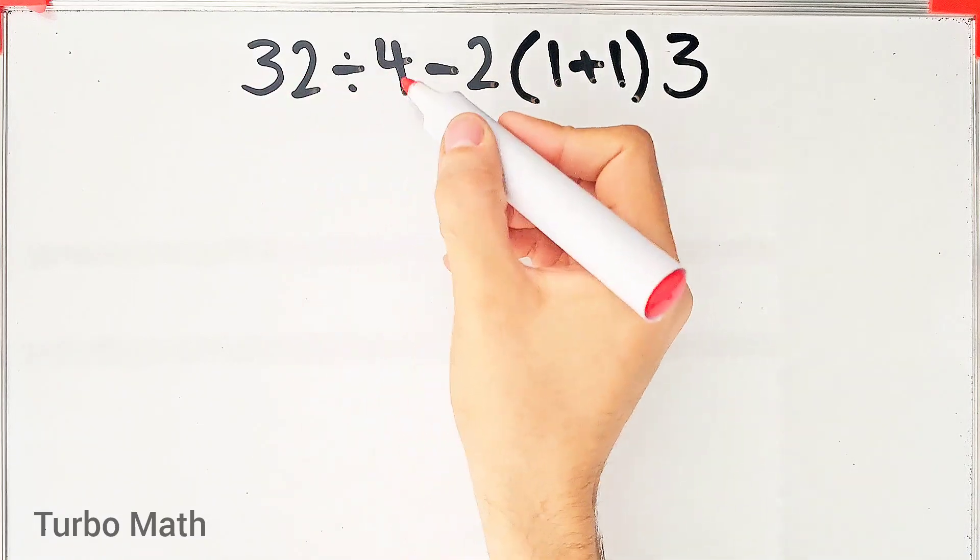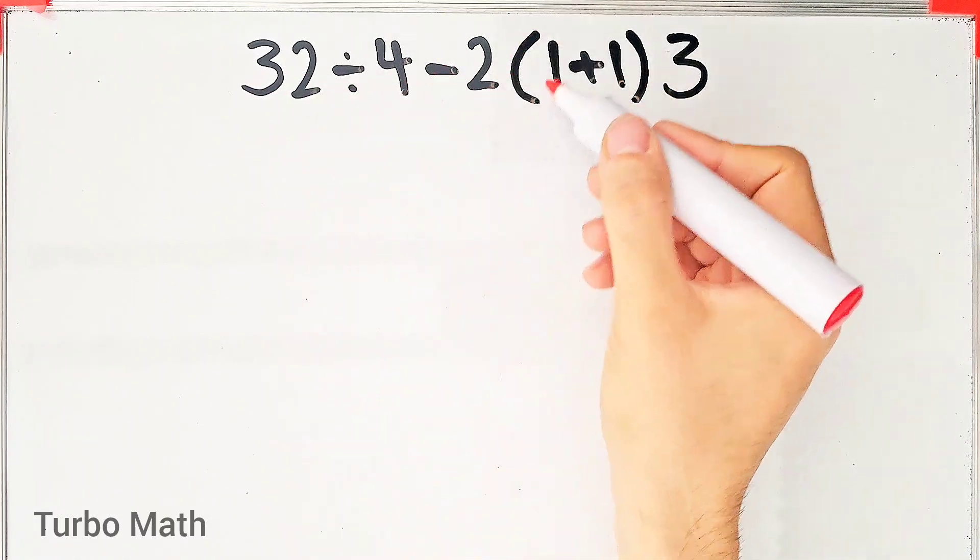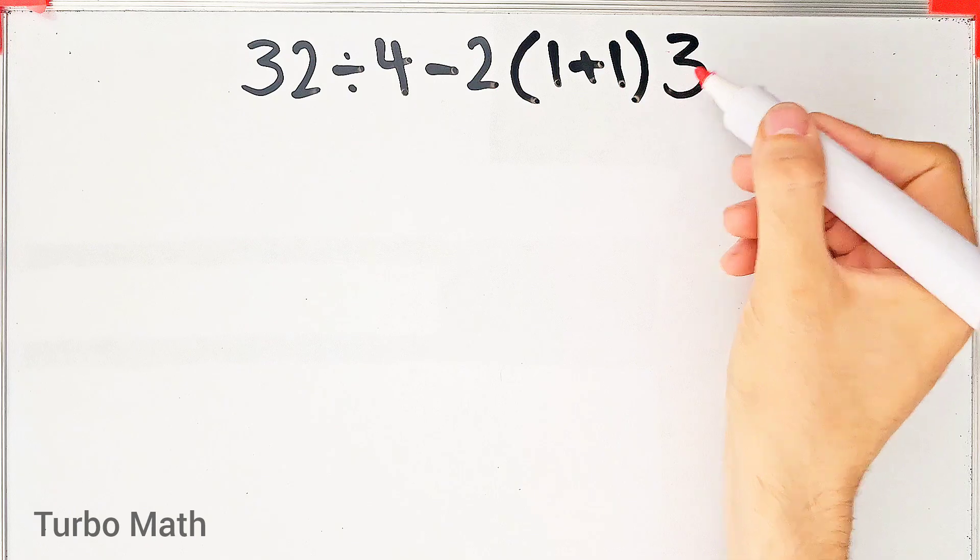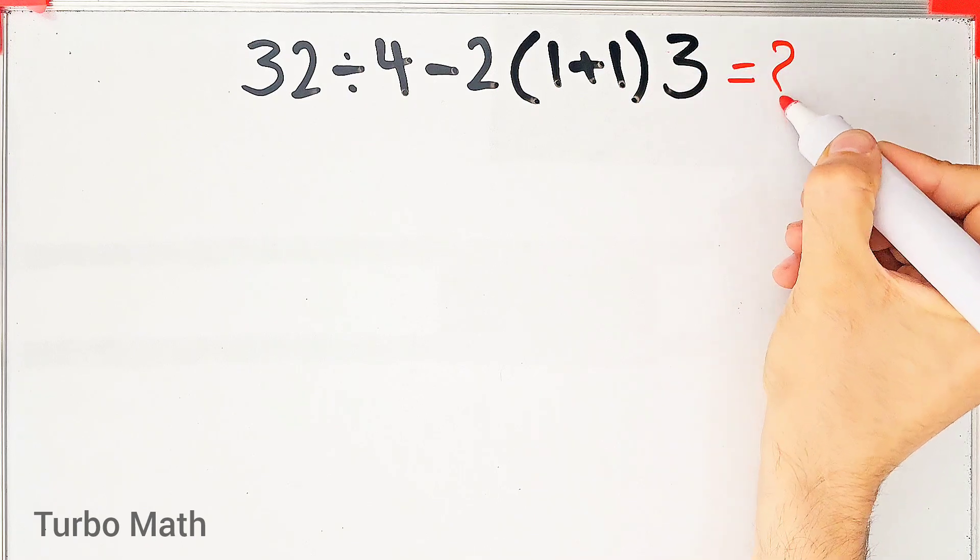32 divided by 4 minus 2 then times 1 plus 1 then times 3. What is the answer to this question? Can you solve it?